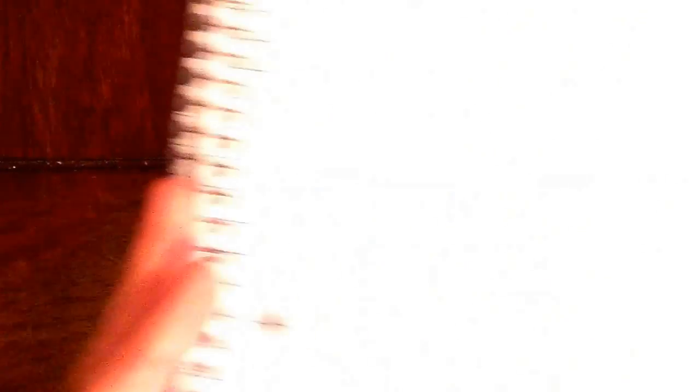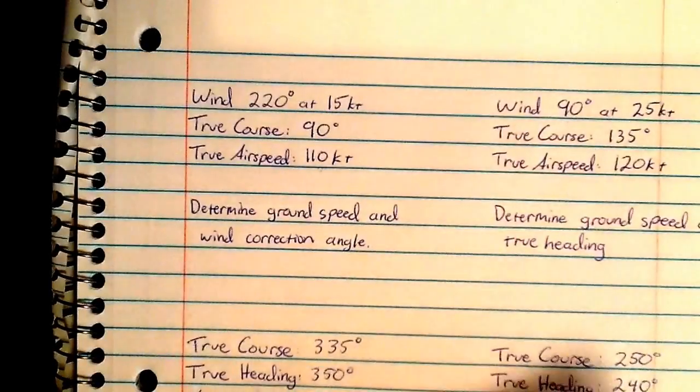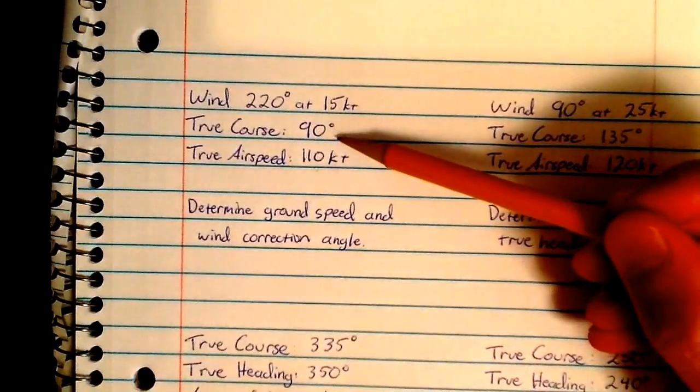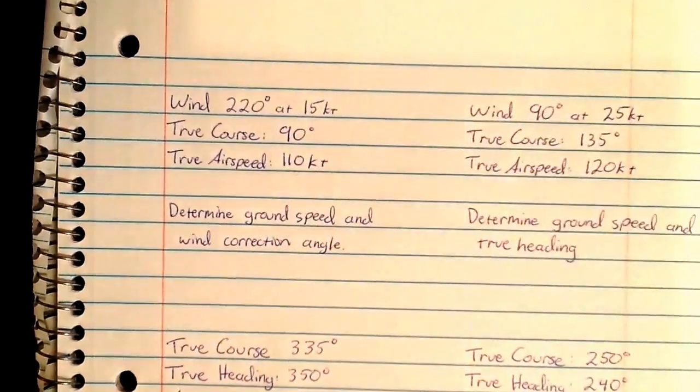So let's do a problem. Say your wind is from 220 degrees at 15 knots. Your course on the sectional is 90 degrees, and your airspeed is 110 knots, and we need to determine ground speed and wind correction angle.